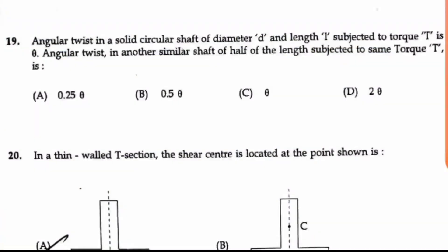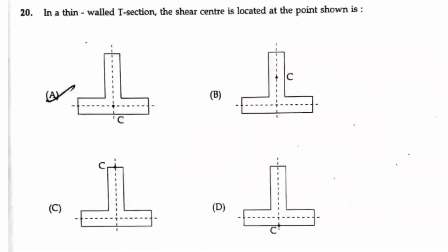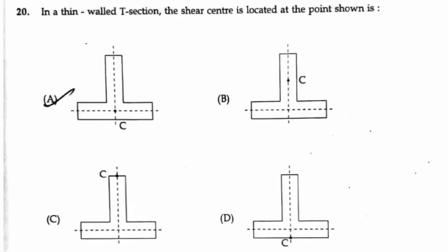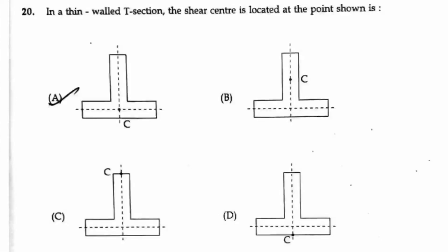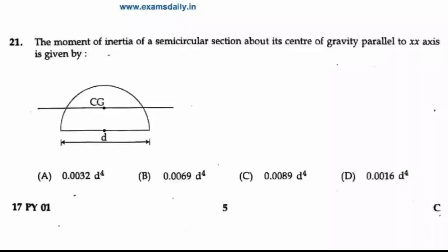Question 20: In a thin wall T section, the shear center is located at which point? The shear center is actually the intersection of the bending axis and the cross section of that particular object. From these four diagrams, you can tell that A is the right answer because the other three options do not have their shear center at the correct position.